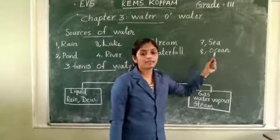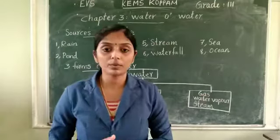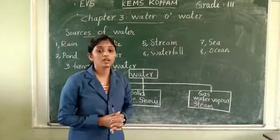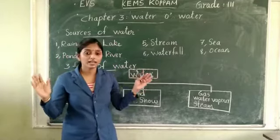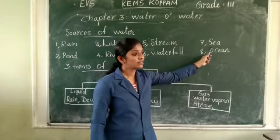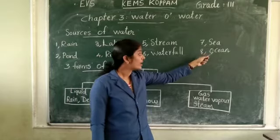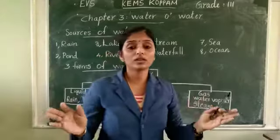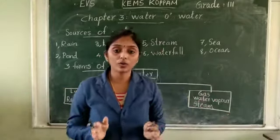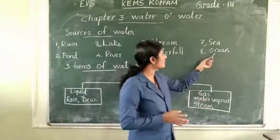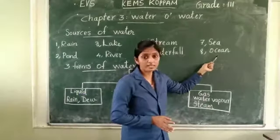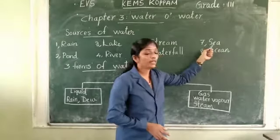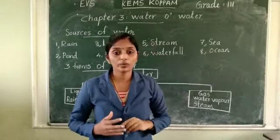The next source is a sea. Huge and salty water bodies are called seas. And next is an ocean. Huge and salty water bodies are also called oceans, but an ocean is larger than a sea.